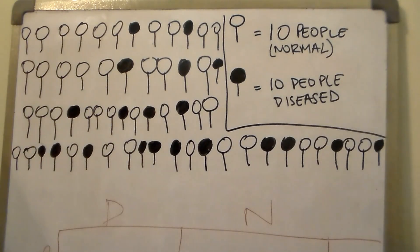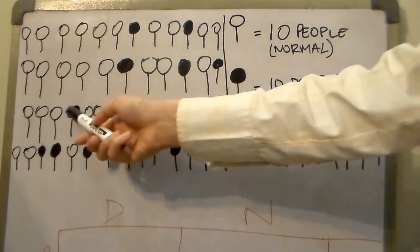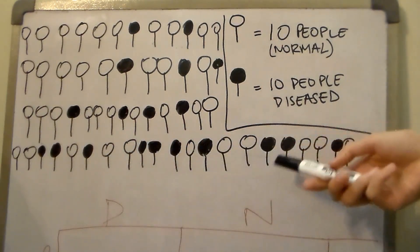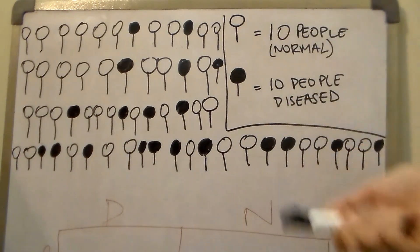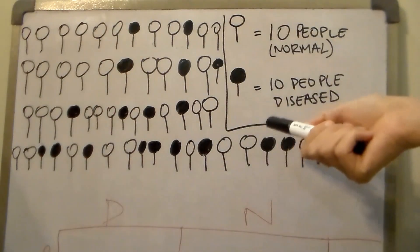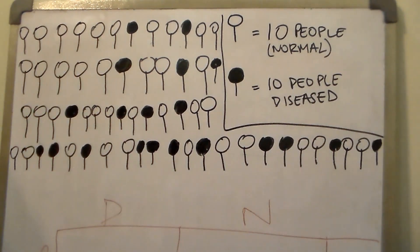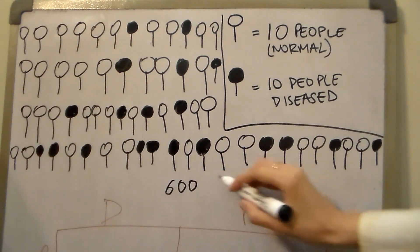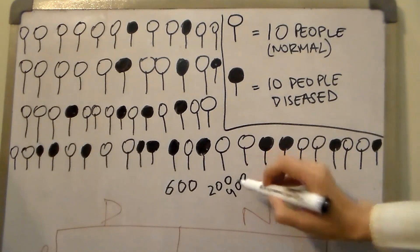Now let's suppose that the number of diseased people were counted — 20 groups of 10, so 20 multiplied by 10 is 200. There are 200 people who have the disease, and a total of 600 people in this population. So in this group of 600 people, 200 have the disease and 400 people are normal.